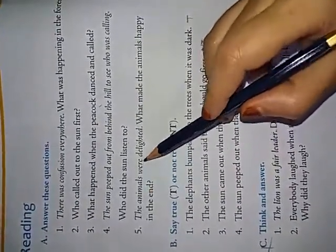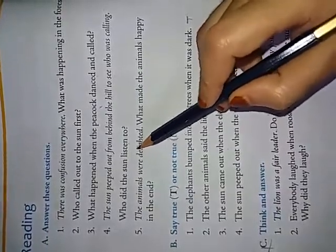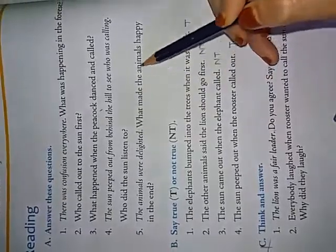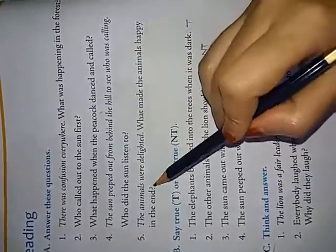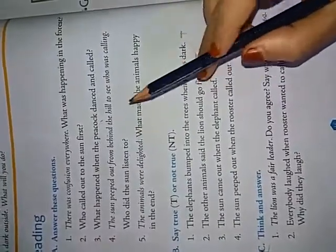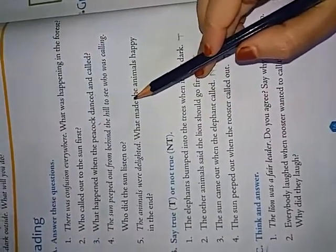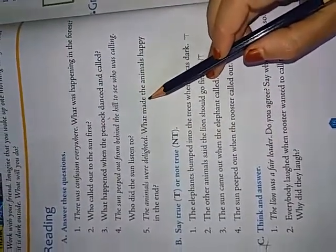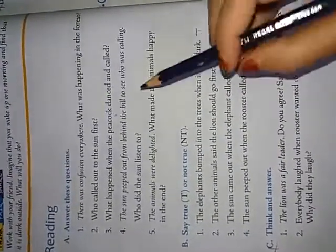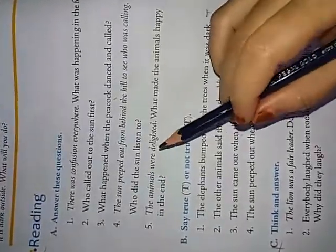Fifth one. The animals were delighted. D-E-L-I-G-H-T-E-D. Delighted is nothing but very happy. What made the animals happy in the end? Because when the rooster called out loudly, the sun rose high in the sky and there was light everywhere.